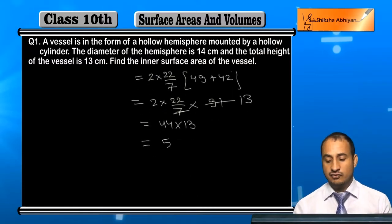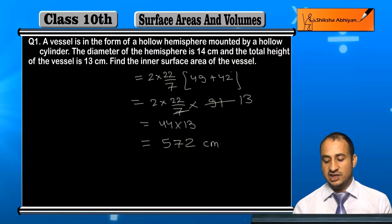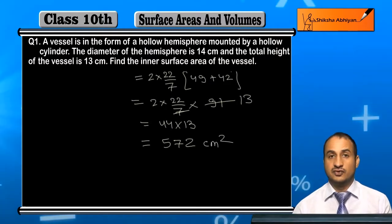And when you multiply 44 into 13, what will you get? 572 cm² is the surface area of the vessel.